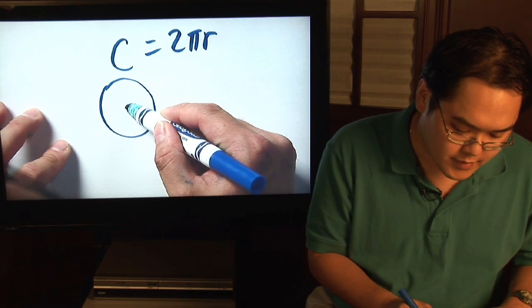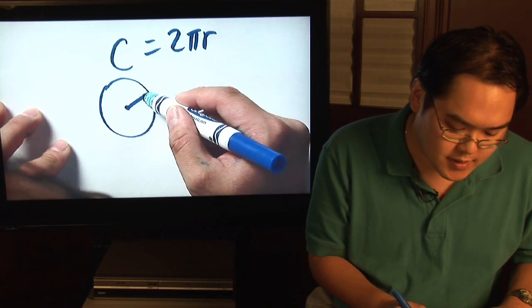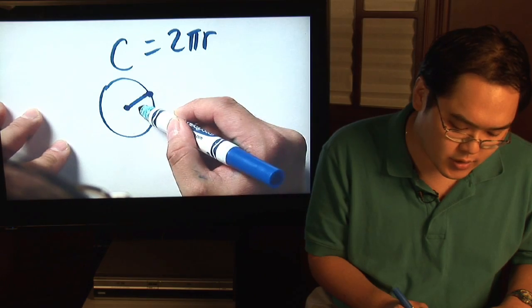Suppose you have a circle, and you're given that the radius, the distance from the center to a point on the circle, is 7.